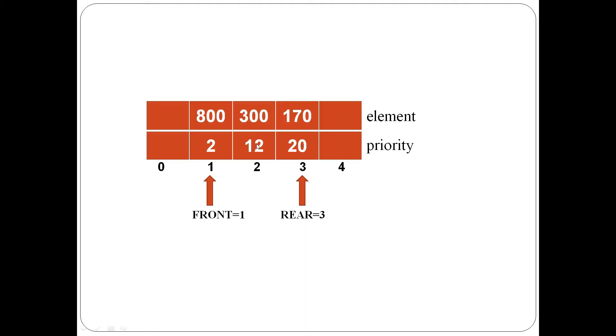This is a priority queue. Here, the first row contains the elements and the second row contains the corresponding priorities.